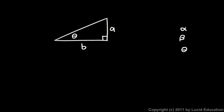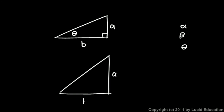If we had a different triangle with a different angle, then the ratio A over B would be different than it was for the other triangle. So the ratio changes when the angle changes.